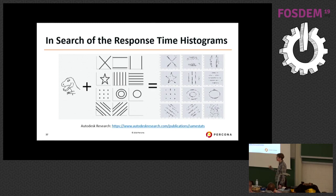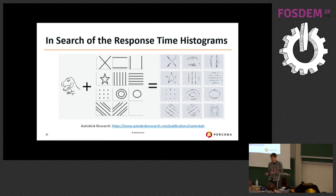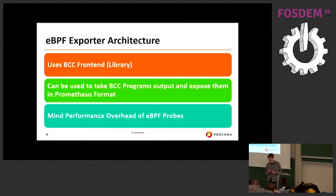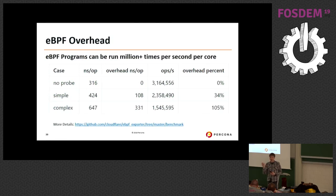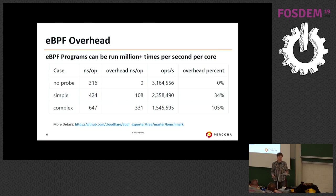Here is a nice graph from a Cloudflare talk showing that while all of these datasets have the same average value, they are completely different pictures — that's Anscombe's quartet. That's why we need to go beyond averages and even mean values to really understand histograms. The eBPF exporter uses the BCC library to get data and outputs it in Prometheus format. One thing to be careful about when running the exporter in production is overhead — a very complex probe on a very common operation run millions of times a second can cause over 100% overhead, as Cloudflare measured.